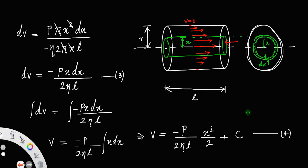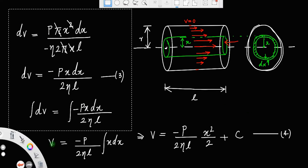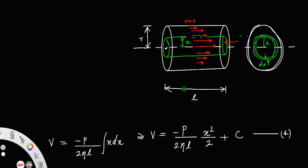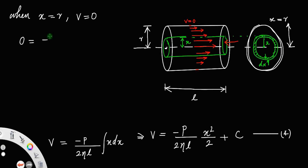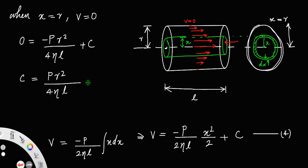Now we need to find the value of the constant C. Using the boundary condition: at the extreme point x = R, the velocity is 0. Substituting: 0 = −(PR²)/(4ηL) + C, so C = PR²/(4ηL).